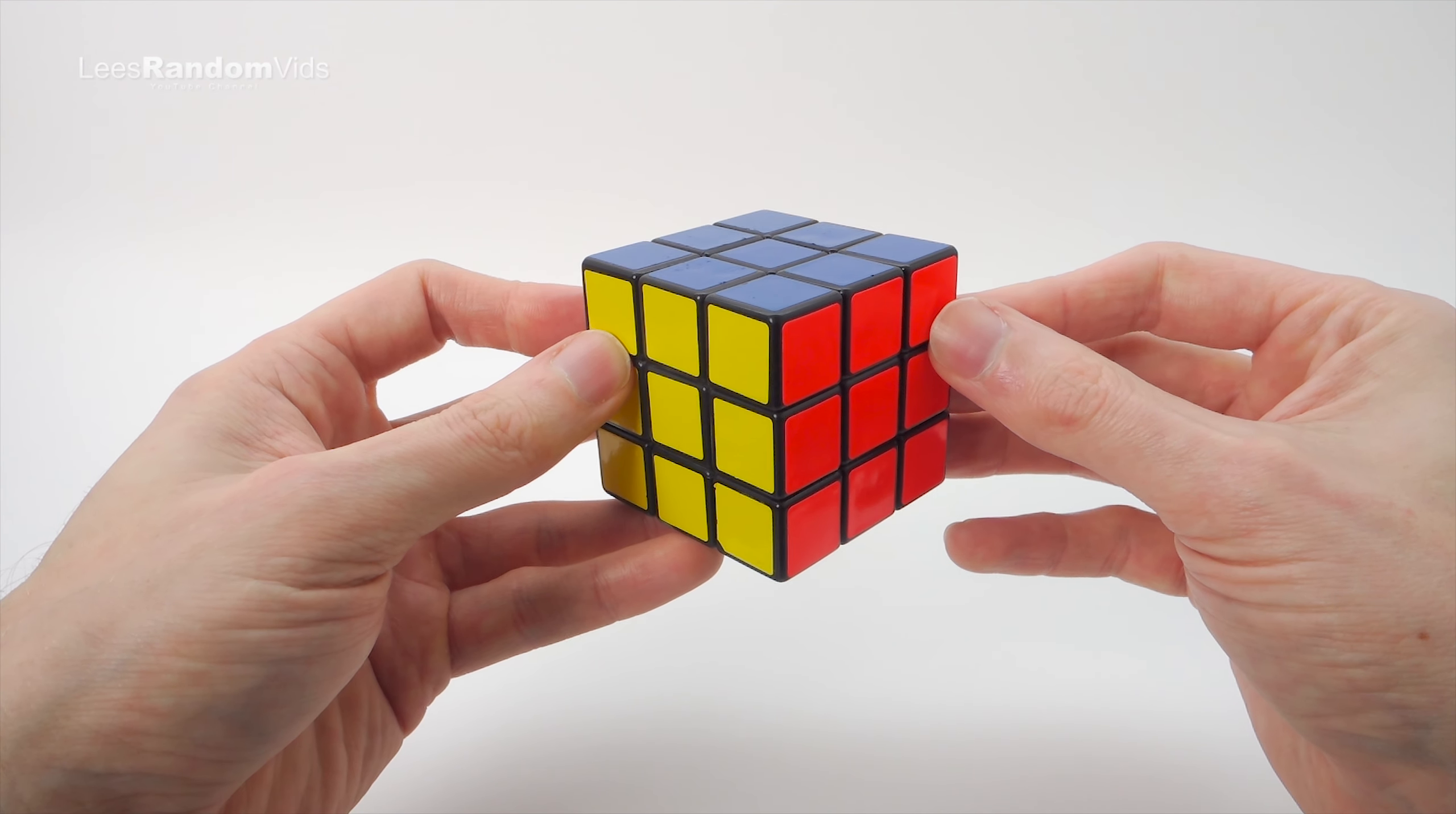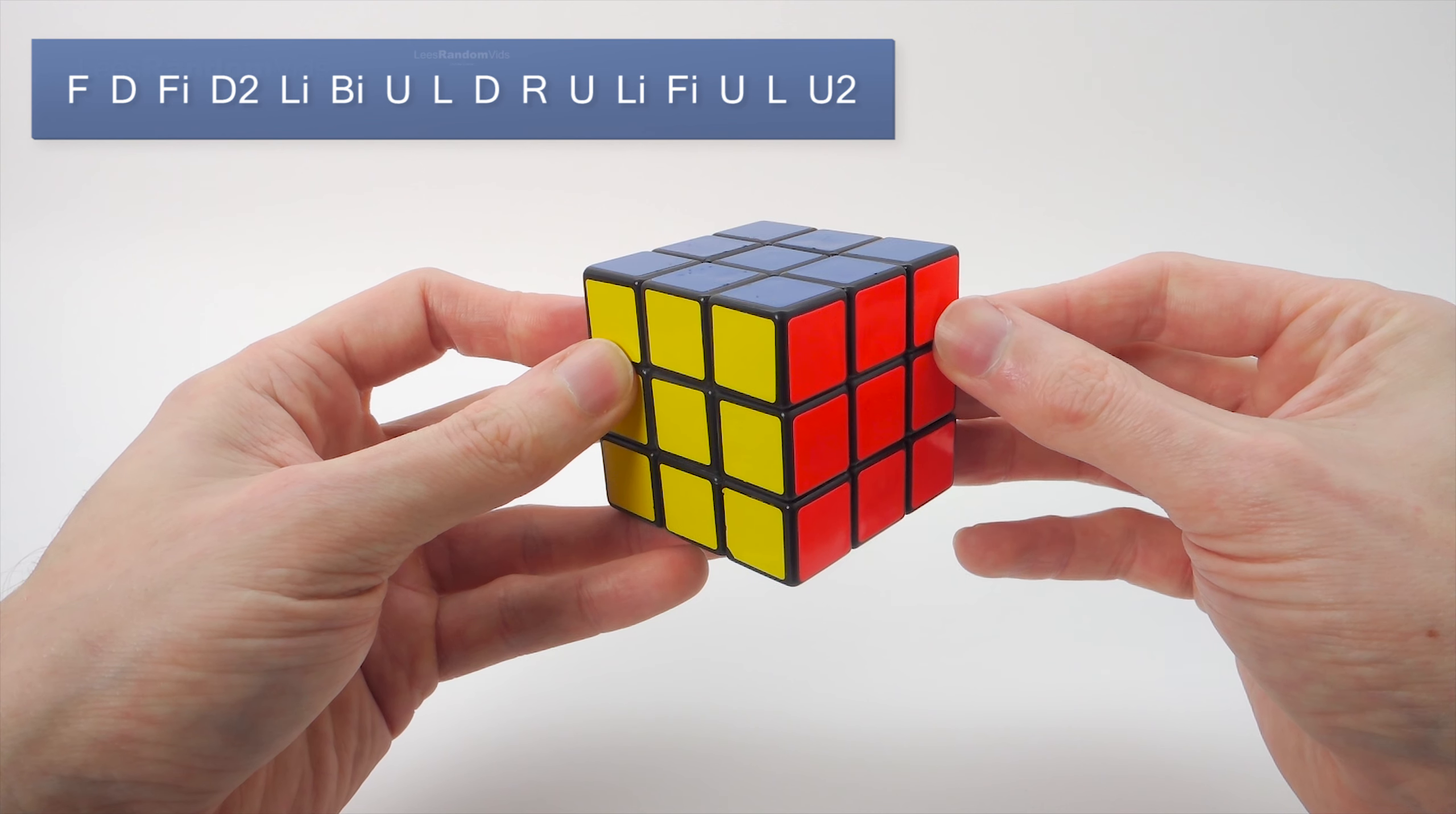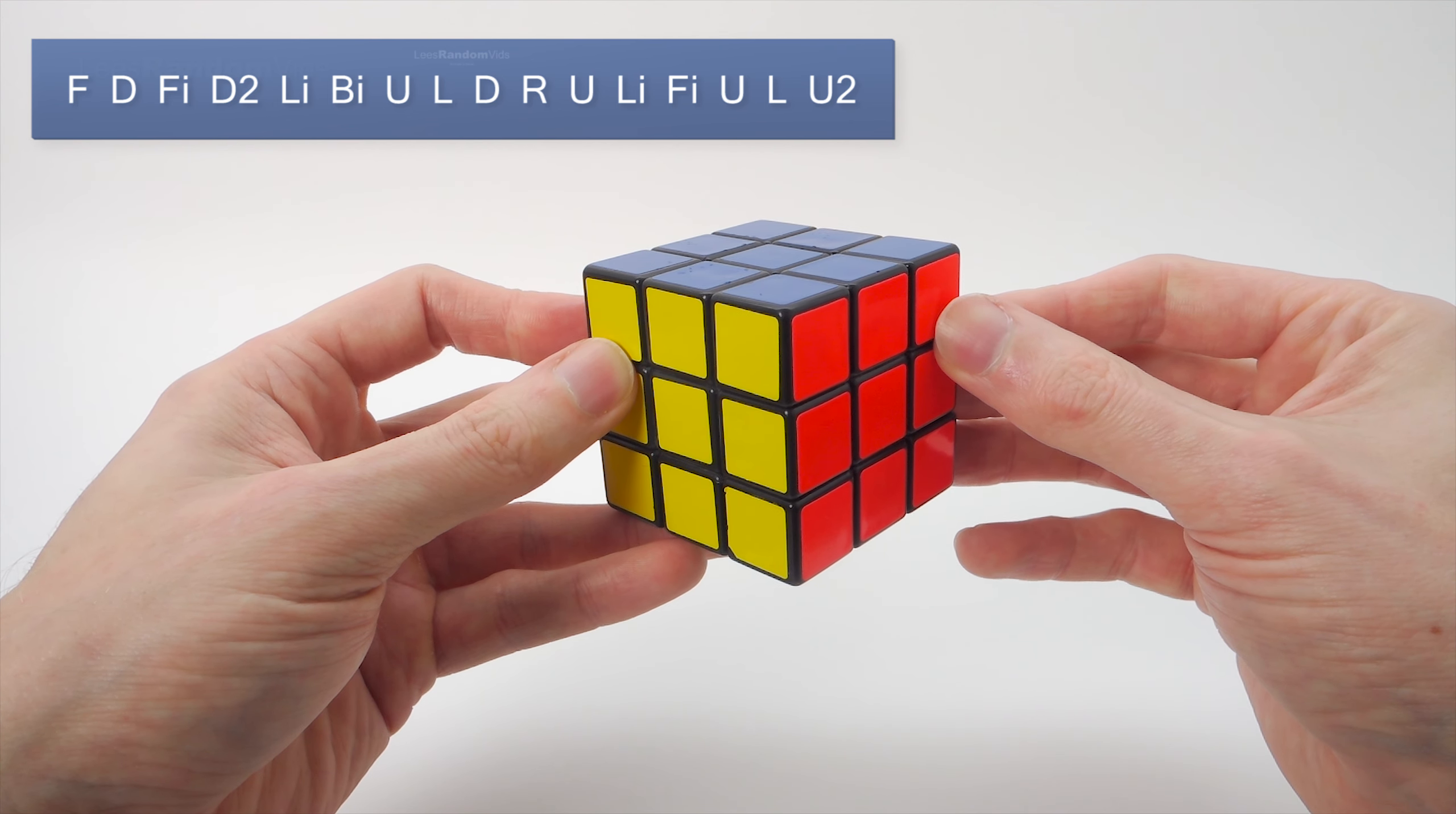So to do this pattern we need to use an algorithm. And that algorithm is: F D F inverse, D2, L inverse, B inverse, U L D, R U, L inverse, F inverse, U, L.